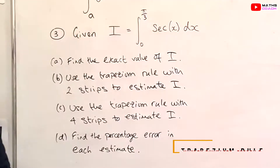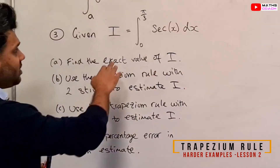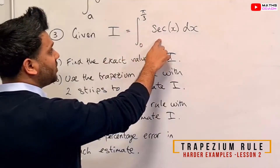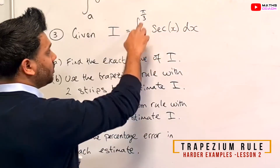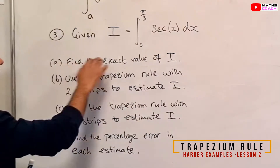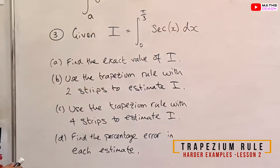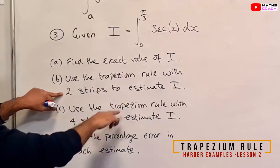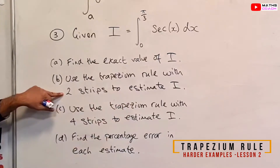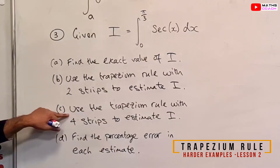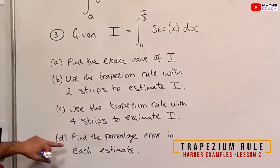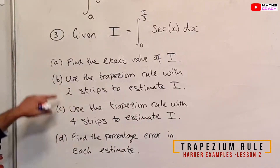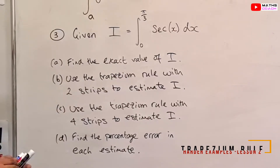Okay, so question number three. Given that I is equal to the integration of sec x with respect to x from 0 to pi by 3, find the exact value of I. Part b, use the Trapezian rule with two strips to find an estimation for I, and also use the Trapezian rule with four strips to find another estimation for I, then work out the percentage error in each of those estimations.